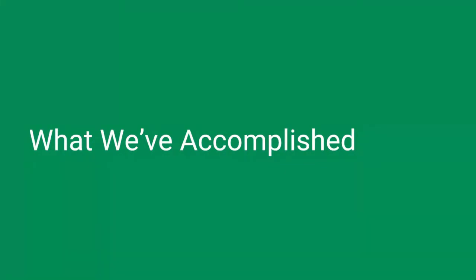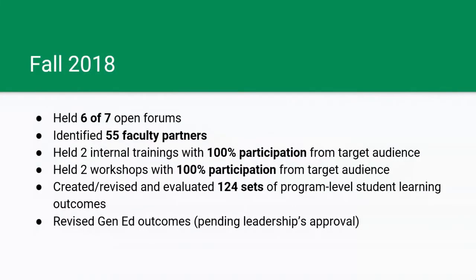I want to spend a little bit of time talking about what we've accomplished so far this semester. From the end of August to this point, some highlights of this process: we have held six out of seven open forums, with one last open forum still to come this semester. We've identified 55 faculty partners in this work, held two internal trainings with 100% participation from our target audience, and two workshops with 100% participation from our target audience. We've also created, revised, and evaluated 124 sets of program-level student learning outcomes.